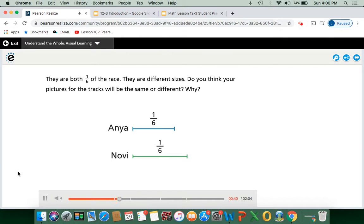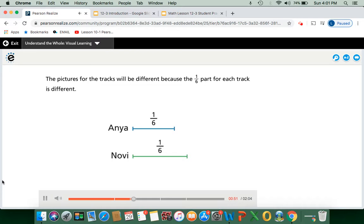They are both one-sixth of the race. They are different sizes. Do you think your pictures for the tracks will be the same or different? Why? So think about it for a second. Do you think that both of these will be the same length in total? Probably not, right? Because this one for Novi is a little bit longer than Anya's. So let's take a look at what they say here.